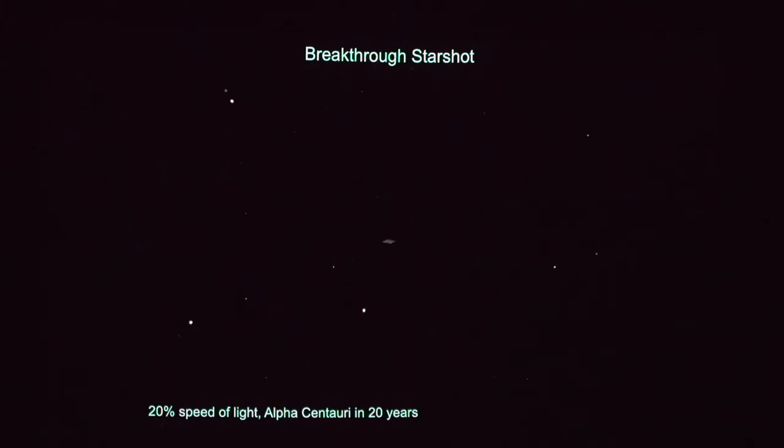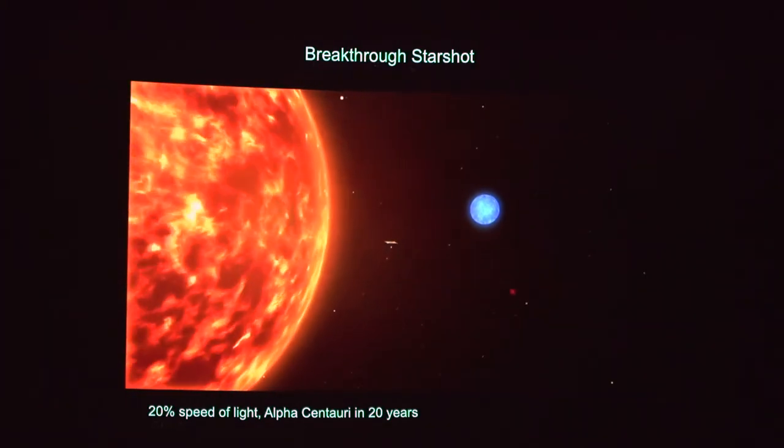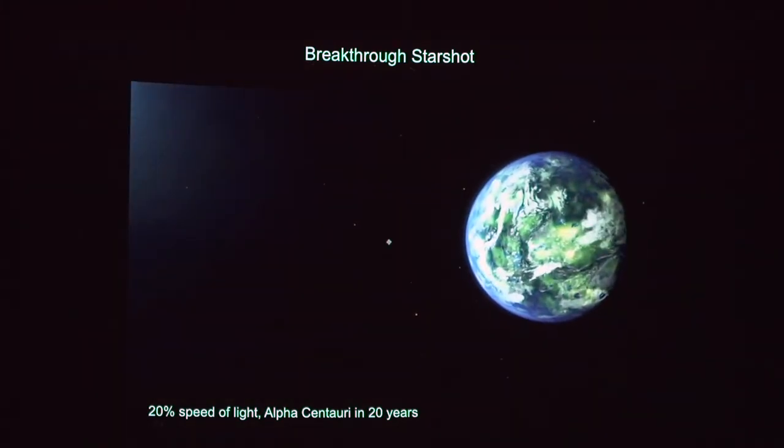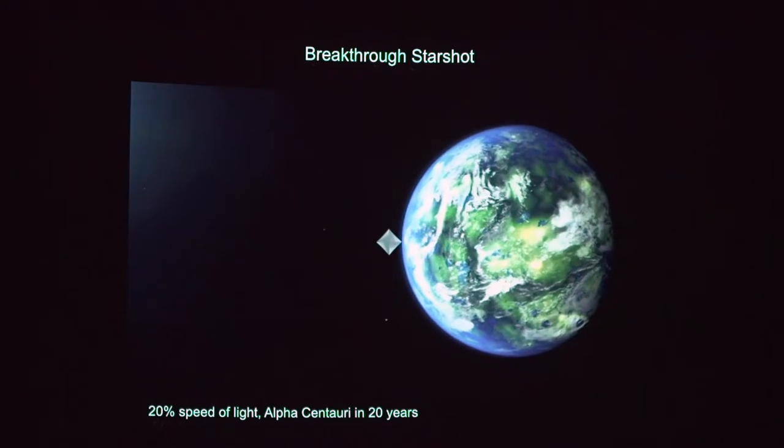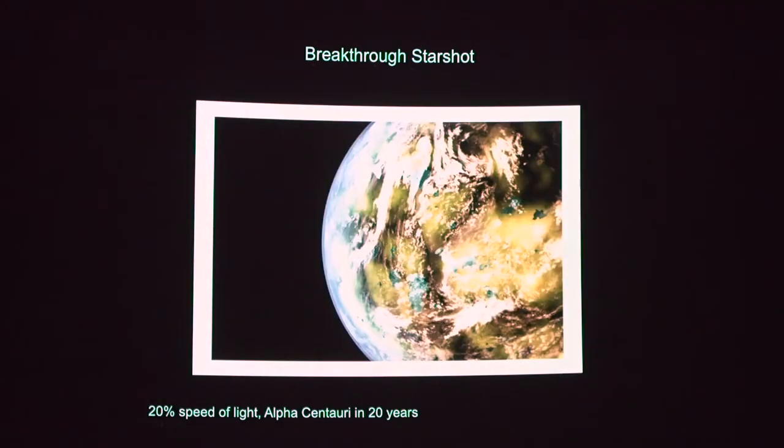But one problem is that, because they're going so fast, and these spacecraft are so small, there's really no way for you to slow them down. And they'll pass through the Alpha Centauri system in literally a few hours. So you might be able to squeeze off a handful of snapshots, but you're not going to be able to get much data from these fly-throughs.